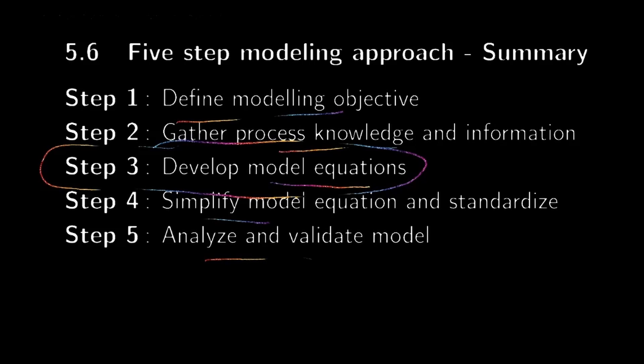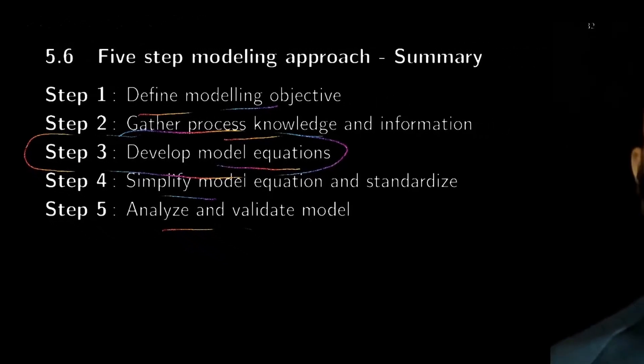For step one, we'll discuss for each problem how the variables are linked and how to define the input-output variables relevant to a modeling exercise. For step two, whatever knowledge is required for developing the model we'll use; other information will be left for later stages where we'll do model validation. This is the five-step approach we'll follow in this series of talks.